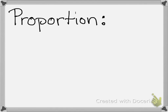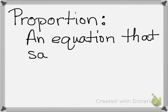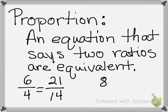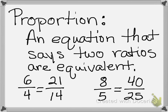So that brings us to what a proportion is. A proportion is how we show that two ratios are equivalent. The shortcut definition: we put an equal sign between two ratios that are the same. The definition of a proportion is an equation — that means it has an equal sign — that says two ratios are equivalent. Some examples: six-fourths equals twenty-one-fourteenths, and eight-fifths equals forty-twenty-fifths. Those express the same ratio.